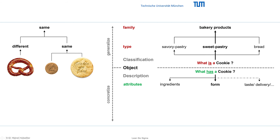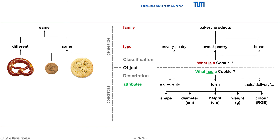But our cookies have even more attributes. The questions 'what has' or 'what characterizes the object' can help you identify these attributes. Some abstract attributes, like the form, can be divided into the attributes shape, diameter, weight, and color. By measuring values to these attributes, we describe a specific object. For example: shape equals cylinder, diameter equals 10 cm, height equals 0.7 cm, and weight equals 10 g.